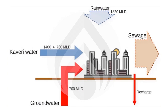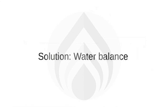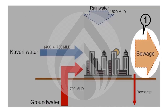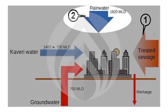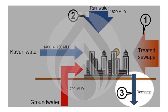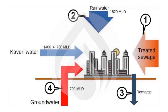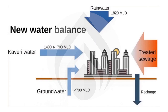The only solution is to stop wasting our two largest water sources: rainwater and sewage. The solution consists of four parts: do not let the sewage leave the city — treat it and reuse; do not let the rainwater flow away — capture it and use; boost the groundwater recharge with good quality water; and use less groundwater till the water table improves. This is the new water balance all over the city.